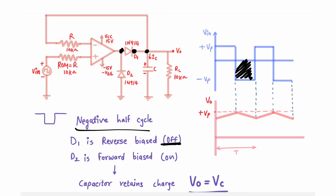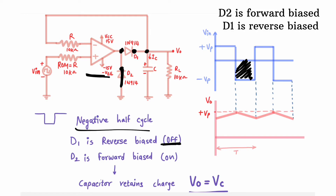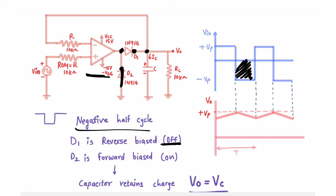Now look at D2. In the negative half cycle, the negative terminal of D2 is connected to the output of the op-amp, so D2 will get forward biased and this path will be like a short circuit — the negative cycle is bypassed to ground. Now what is the state of the capacitor? The capacitor had Vp voltage and has no path to discharge: D1 is reverse biased on one path, and on the other path the op-amp's input impedance is very high. So the capacitor retains its charge.